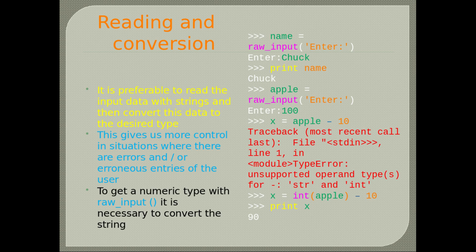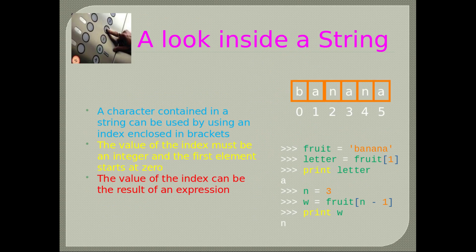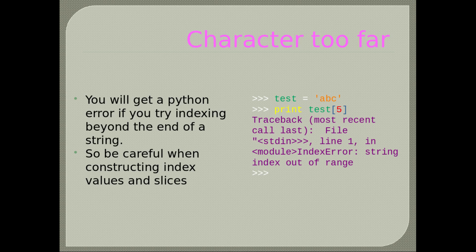To get a numeric type with raw_input() it is necessary to convert the string. A look inside a string: a character contained in a string can be used by using an index enclosed in brackets. The value of the index must be an integer and the first element starts at zero. The value of the index can be the result of an expression. You will get a Python IndexError if you try indexing beyond the end of a string.